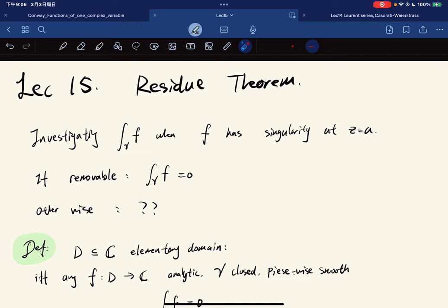All right, this lecture will prove the famous residue theorem. We are investigating the line integral when f has singularity at z equals a. If it's removable, then n equals zero, but otherwise we don't know, right?